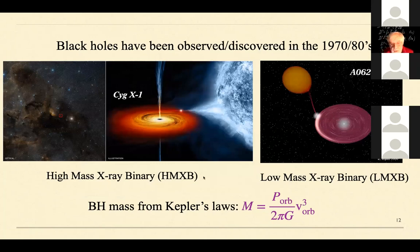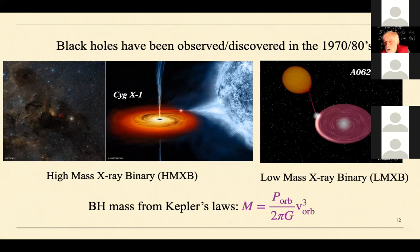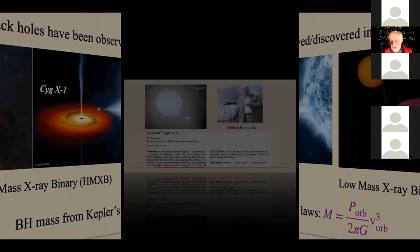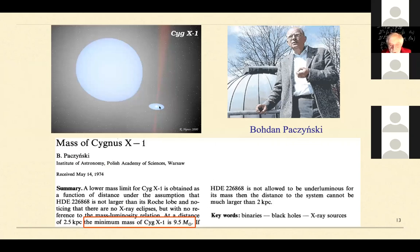The first and oldest criterion: a compact body with a mass larger than three solar masses is a black hole. Why three solar masses? Because we know from studying neutron stars that their maximum mass cannot exceed three solar masses — a neutron star above that limit would require sound signals propagating faster than light, which is impossible. You might get up to maybe four solar masses, but no more.